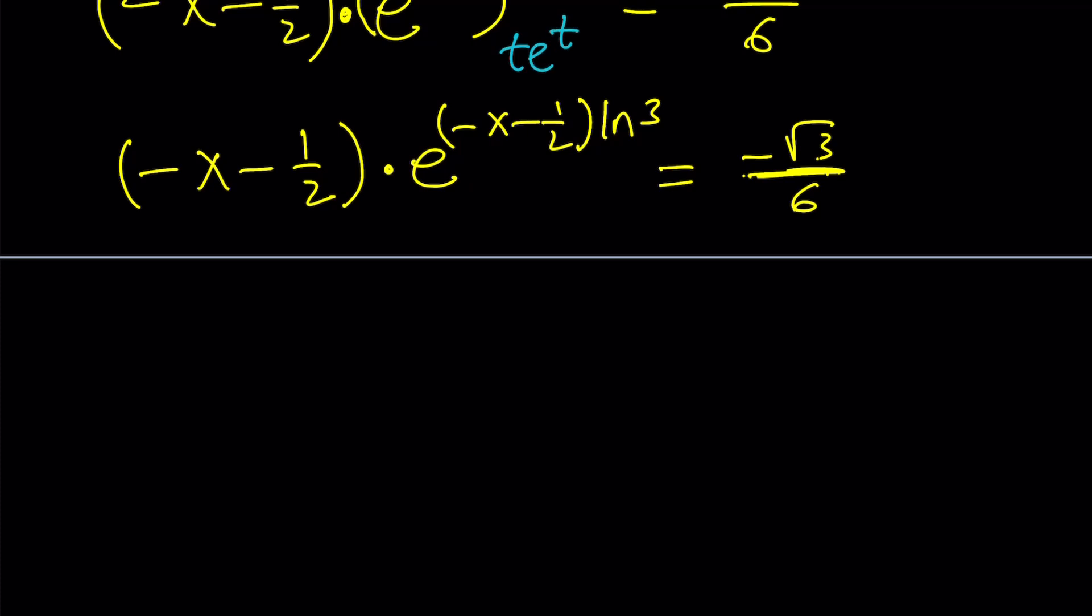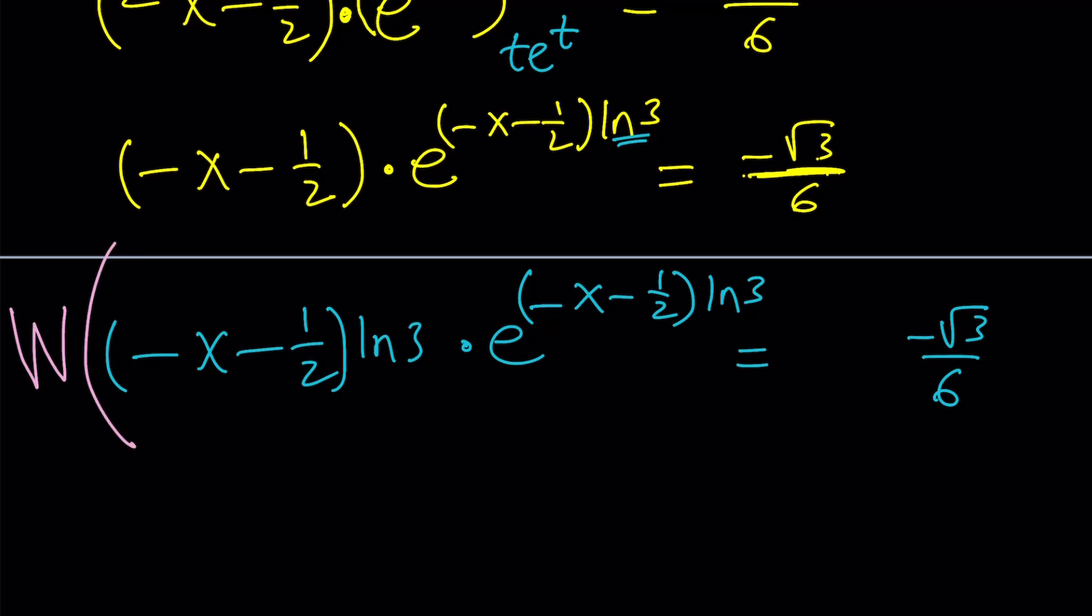And now, the only thing we need is to bring it to the form t e to the t. We're missing our ln3 here. So, we're going to multiply both sides by ln3 next. And that'll do the trick. All right. So, now, our expression is in the desired form. And we're going to go ahead and w both sides. Let's do it. Put a giant w here. The whole thing will be w'd. And I should probably move this a little bit. And I'll put the giant w. And the whole thing is inside the parentheses. And put maybe a smaller w here for the negative root 3 over 6. So far, so good.